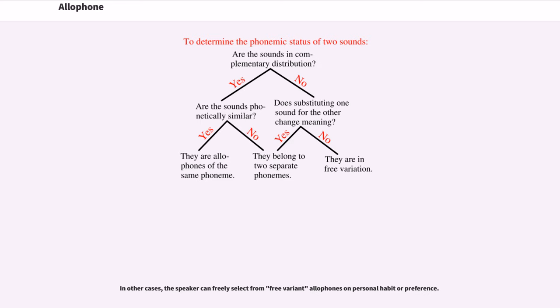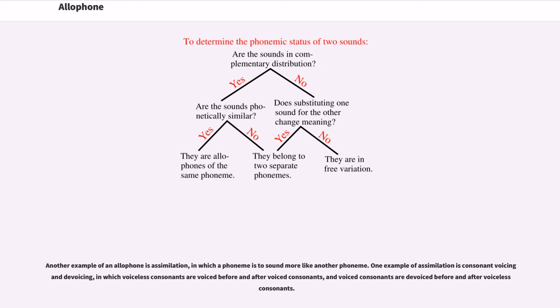In other cases, the speaker can freely select from free-variant allophones on personal habit or preference. Another example of an allophone is assimilation, in which a phoneme is to sound more like another phoneme. One example of assimilation is consonant voicing and devoicing.